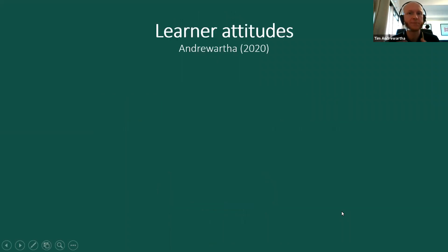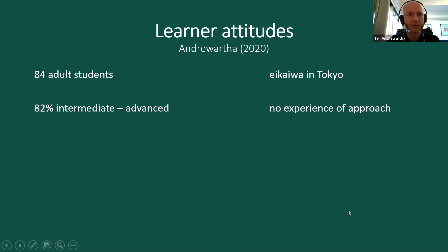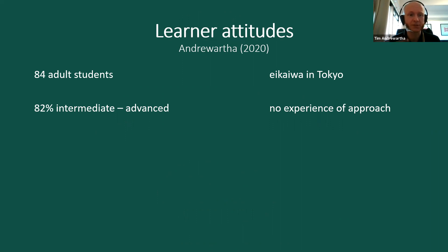It's important to consider the attitudes of the learners. Some research was conducted in an eikaiwa school in Tokyo where 84 adult students participated. The majority of the participants were studying English at higher levels and had no experience of the global approach when the research was carried out.